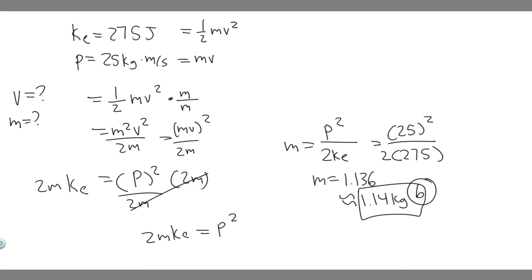Now that we have the mass, we can just plug it into one of these formulas and solve. Because we know p equals mv, momentum equals mass times velocity, the momentum is 25, is equal to mass 1.14 times v. So we can just divide by 1.14, and that's going to give us v.